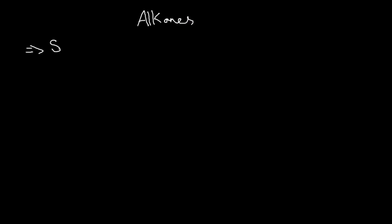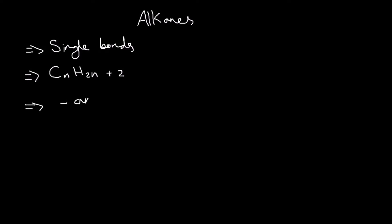I'm going to start off with alkanes. The functional group of alkanes is that they only contain single bonds. The general formula is CnH2n+2. Alkanes always end in '-ane', so you have methane, ethane, propane, butane, and so on. Alkanes are called saturated compounds — a saturated compound is any compound which only has single bonds. If a compound has double or triple bonds it would be labelled unsaturated.